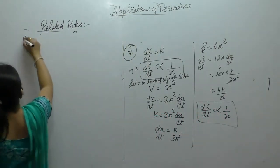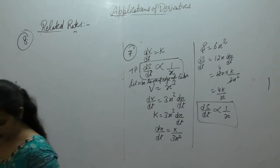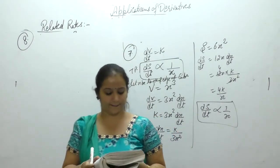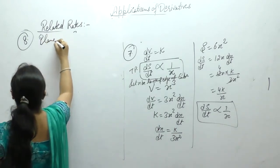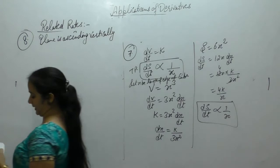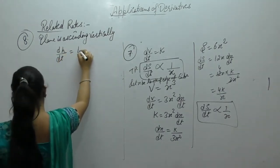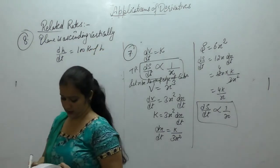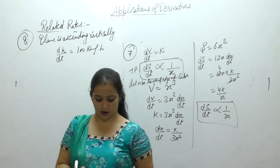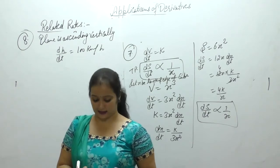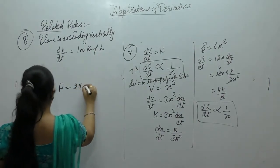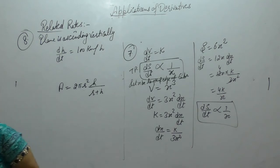Now the next one: an air force plane is ascending vertically at a rate of 100 km per hour. If the radius of earth is r km, how fast is the area of earth visible from the plane increasing at 3 minutes after it starts ascending? Given that visible area at height h is 2 pi r square h upon r plus h.